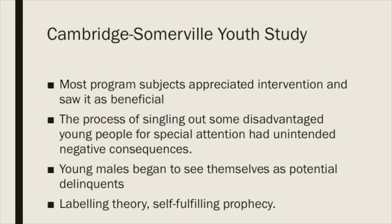Most of the participants actually appreciated the intervention and saw it as beneficial. But it turns out that the process of singling out some disadvantaged young people for special attention actually had unintended negative consequences. One argument is that young males began to see themselves as potential delinquents — those singled out reflected on this and saw themselves as future offenders. This links back to labelling theory and self-fulfilling prophecy, and it's something to be aware of when implementing social prevention strategies.